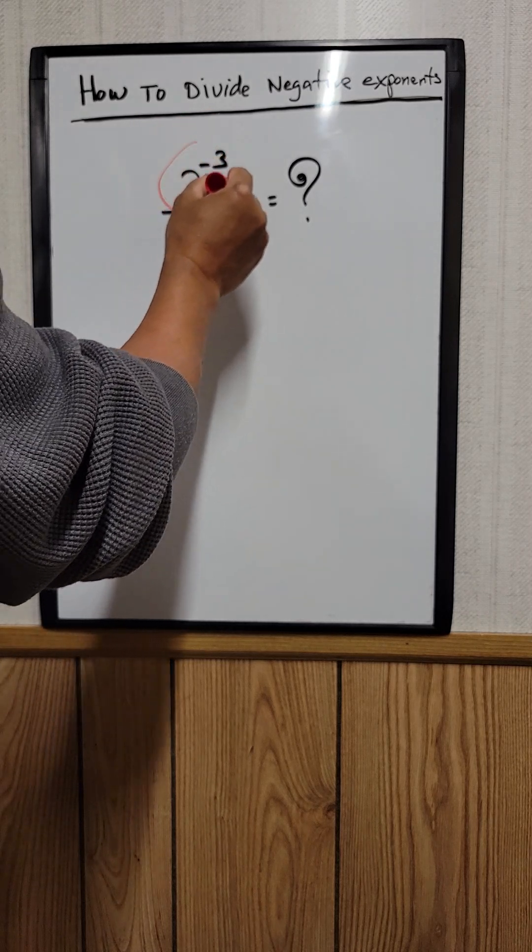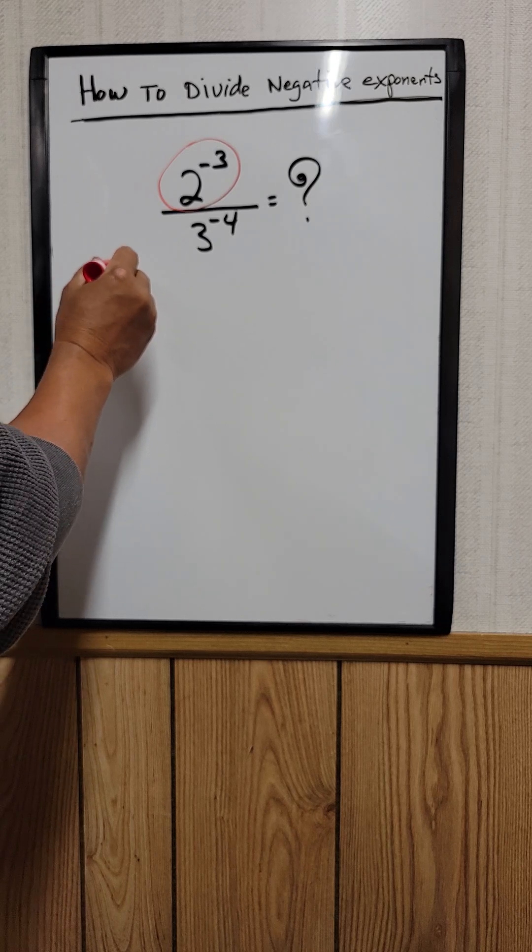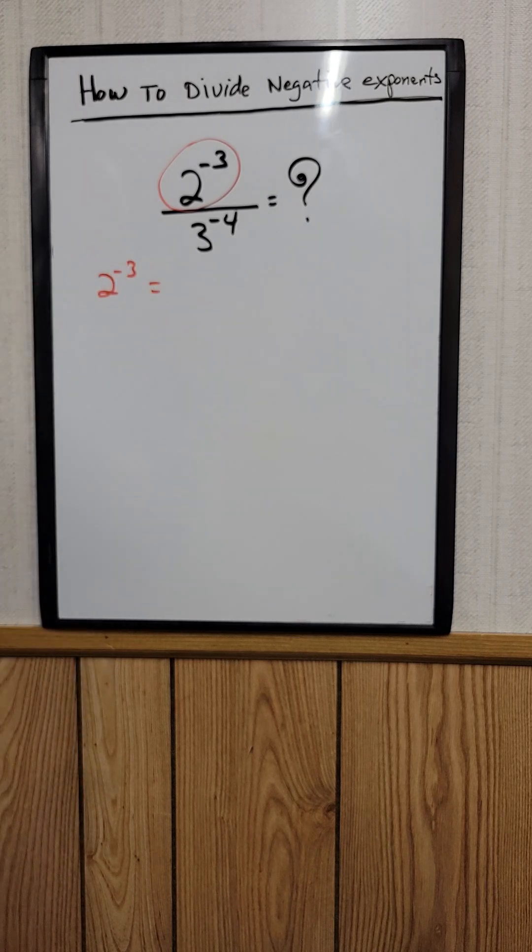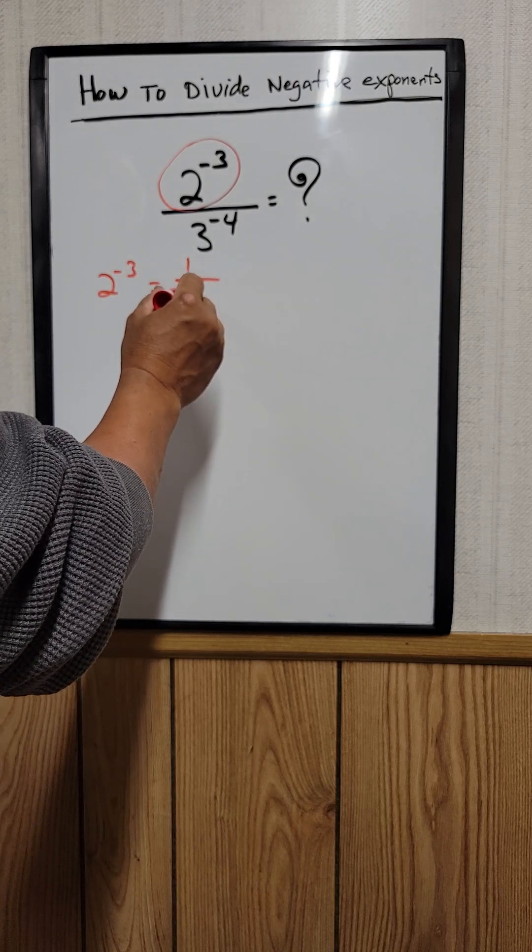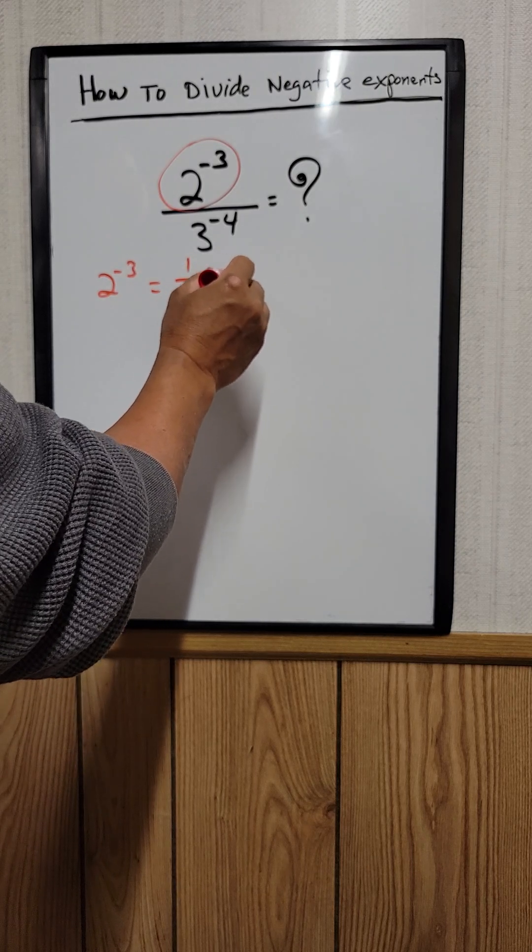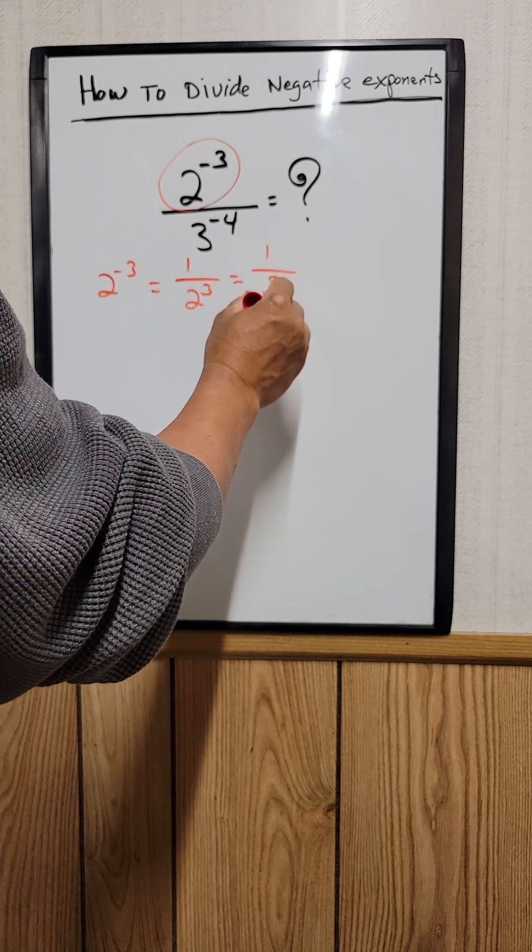So 2 to the negative 3. What is that equal to? It's the same thing as saying 1 over 2 to the 3rd power. So 1 over 2 to the 3rd power is equal to 8. So 1/8.